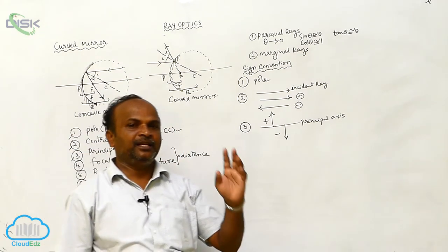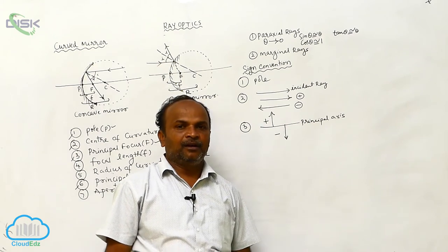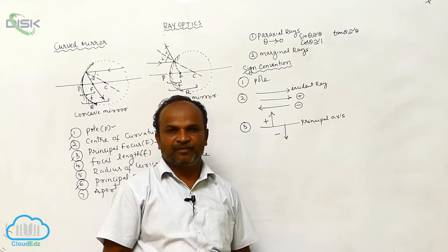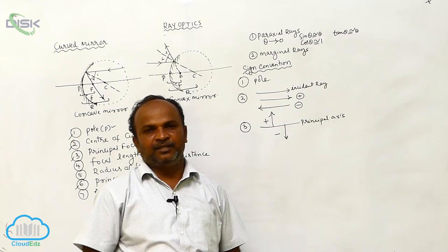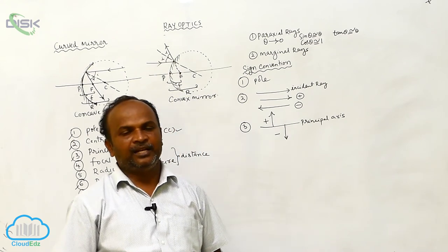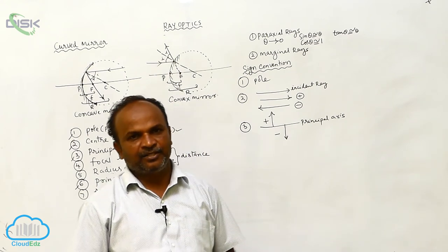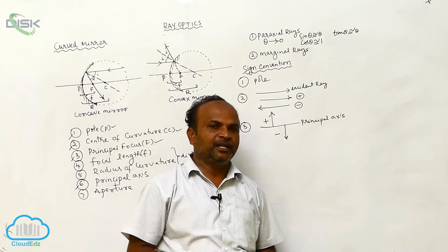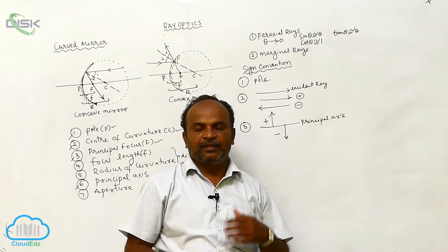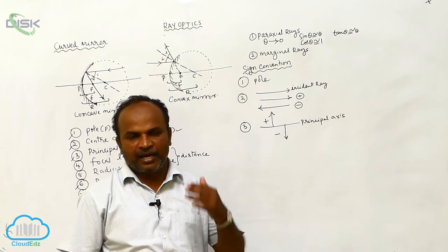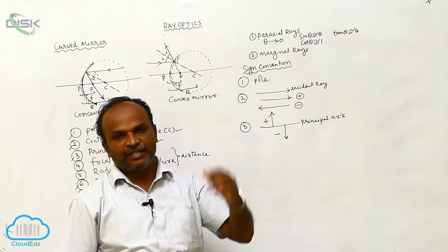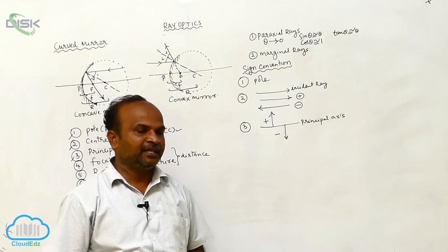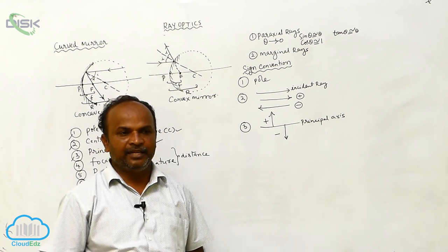Therefore, there are three sign conventions. First: all the distances must be measured from the pole. Second: the distances measured in the direction of the incident ray are taken as positive; the distances measured opposite to the incident ray are taken as negative. Third: the heights above the principal axis are taken as positive, and the heights below the principal axis are taken as negative.